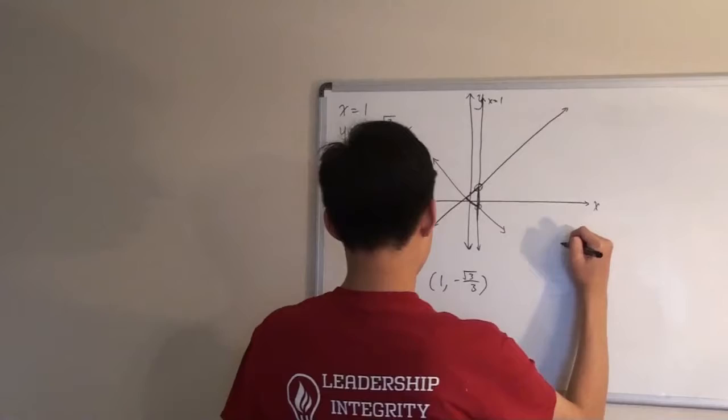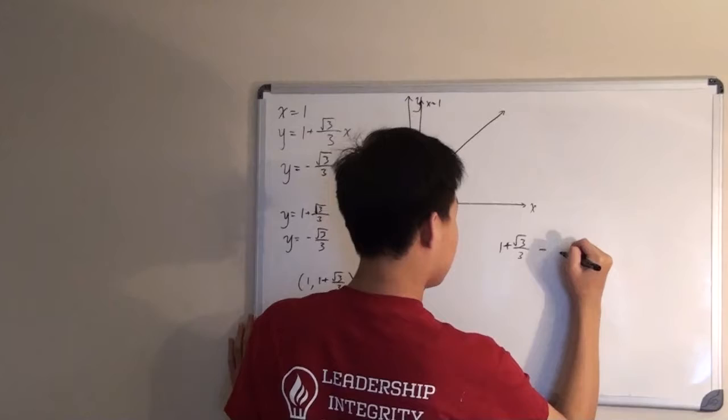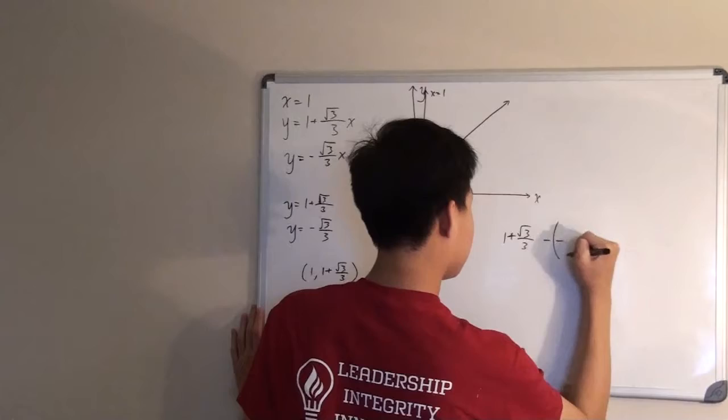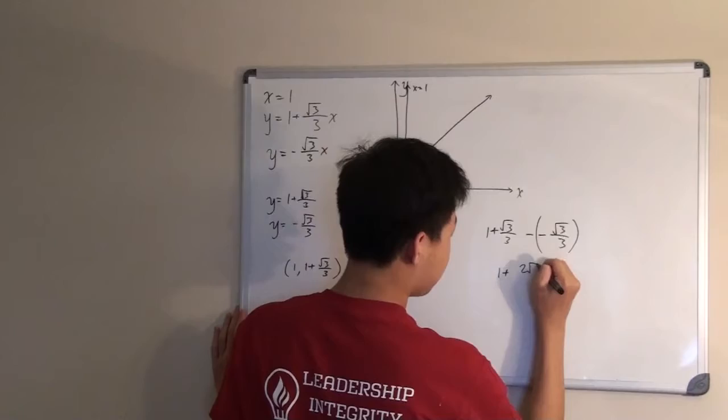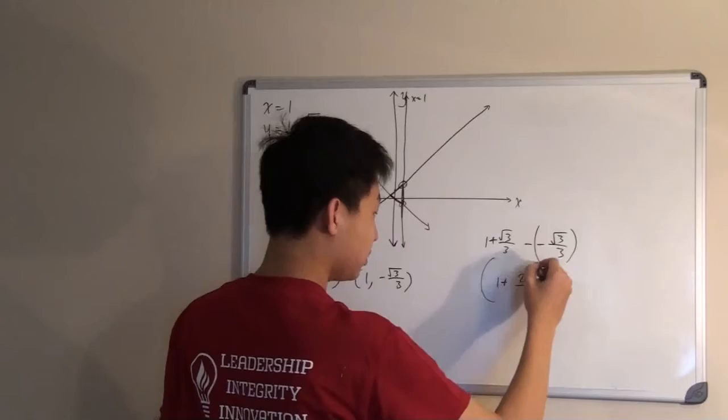So, we just need to subtract the bigger y value from the smaller y value to get our distance. That would be 1 plus root 3 over 3 minus negative root 3 over 3. The two negatives become positive, and you get 1 plus 2 root 3 over 3.